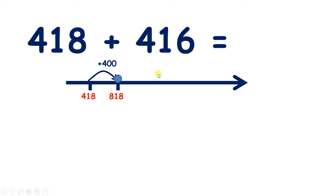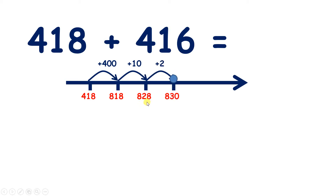Now we can add our one ten, which takes us to eight hundred and twenty-eight. So now we need to add our six units. Two more units takes us to our next ten, takes us to eight hundred and thirty. And now we need four more units, which takes us to eight hundred and thirty-four.